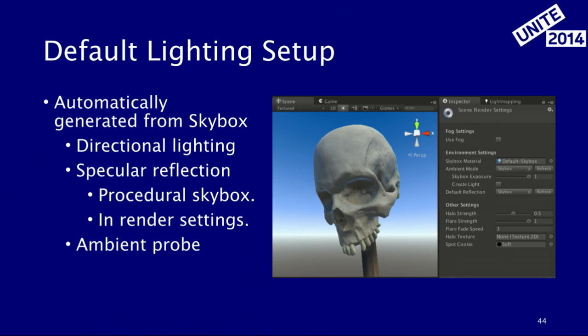We have a skybox environment that is procedurally generated, there by default. You've got the directional light, specular reflection, and the procedural skybox. It's all set in render settings — if you want to replace that, you can edit it there.